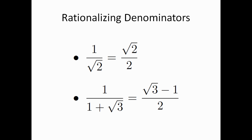It's really important on the GMAT that you know how to rationalize a denominator, because you might get the right answer but the answer choices may have it written with a rationalized denominator. For example, if you got 1 over the square root of 2 but the choices listed the square root of 2 over 2, you need to recognize those are equivalent so you can pick the right answer.